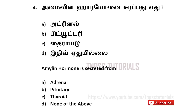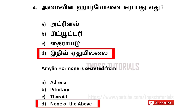Fourth one. Adrenaline hormone is secreted from A) Adrenal, B) Pituitary, C) Thyroid, D) None of the above. And the answer is D — none of the above.